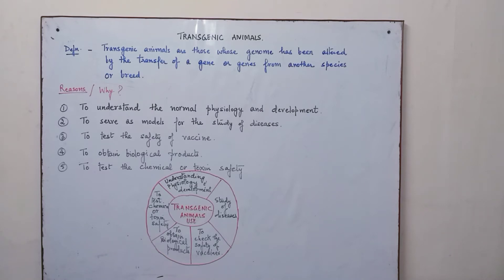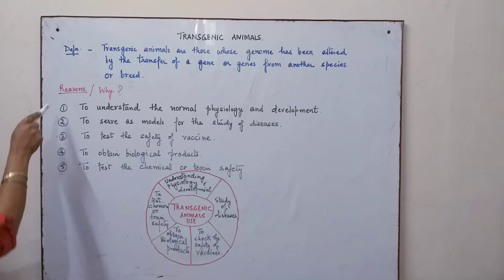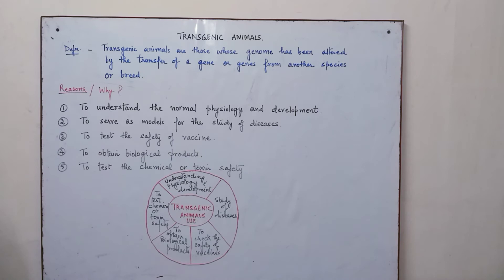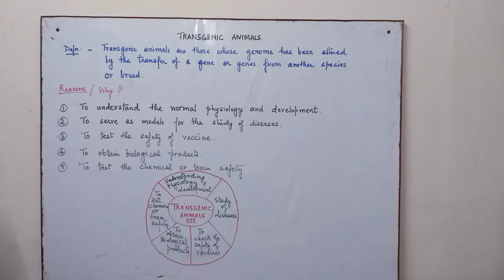A number of transgenic animals are being produced — rats, pigs, mice, etc. — but around 95% of transgenic animals are mice. The first transgenic animal was a mouse that had a growth hormone gene, and this helped in studying how and why genes act. There are several reasons why transgenic animals are used.